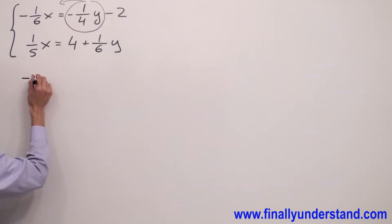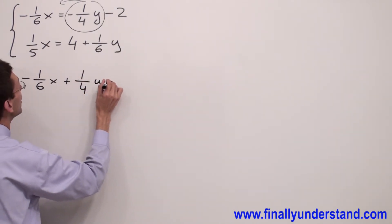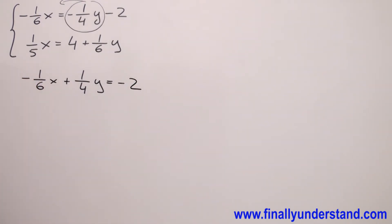So I have negative 1 over 6 x plus 1 over 4 y equals negative 2. Next I'm going to move to the left side 1/6 y.